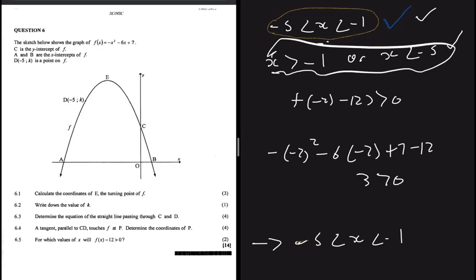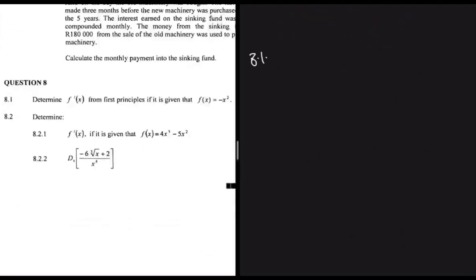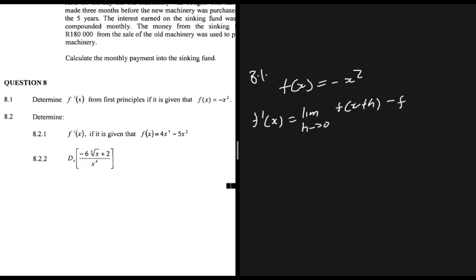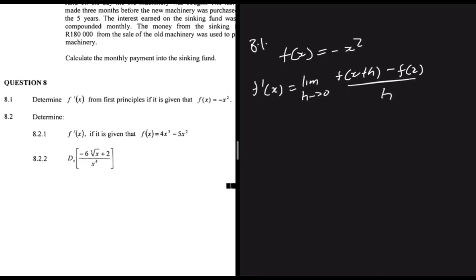For 8.1, find f'(x) from first principles, given f(x) = -x². The formula is f'(x) = lim(h→0) [f(x+h) - f(x)] / h.